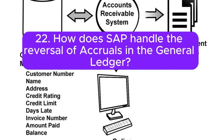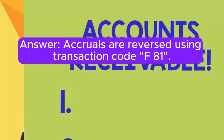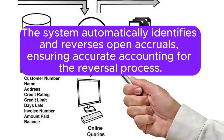Question 22: How does SAP handle the reversal of accruals in the General Ledger? Answer: Accruals are reversed using transaction code F81. The system automatically identifies and reverses open accruals, ensuring accurate accounting for the reversal process.